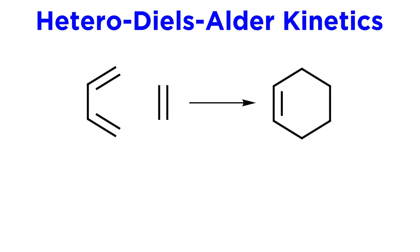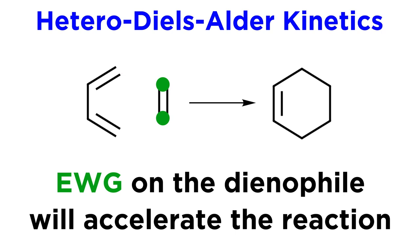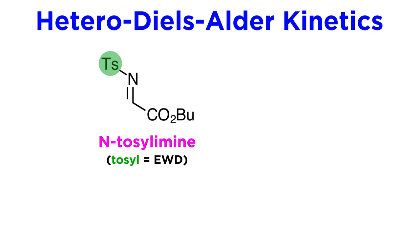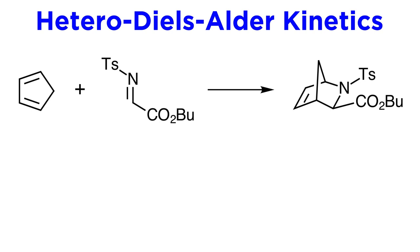We should also understand that the same trends regarding kinetics that we learned for the standard reaction will apply here. Electron-withdrawing groups on the dienophile will accelerate the reaction. Take this N-tosyl imine, for example, recalling that tosyl functionality will withdraw electron density. This will react with cyclopentadiene even at room temperature.